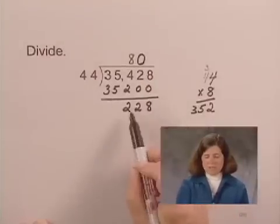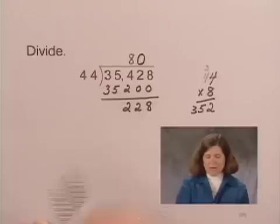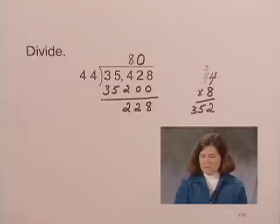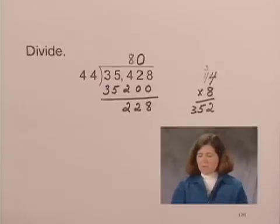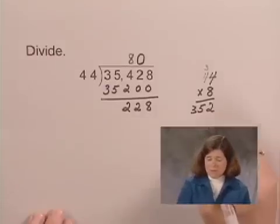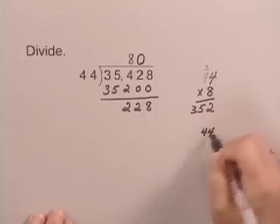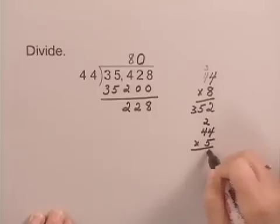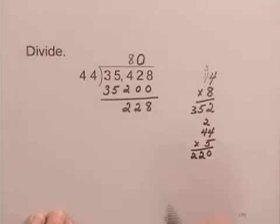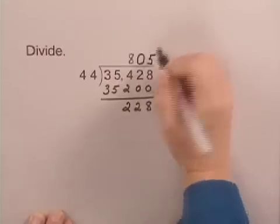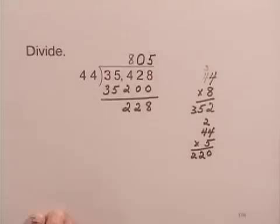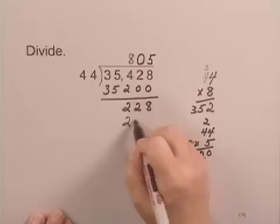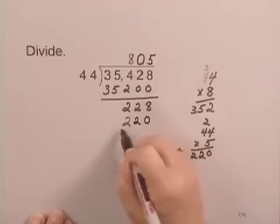Now we move to the next digit, we divide 228 by 44. Again, we need to estimate about how many 40's are in 228, and we're going to estimate 5. So we multiply 44 times 5, and we get 220. We write the 5 in the ones place, we write the product 5 times 44 under the 228, and subtract.